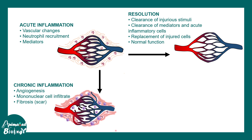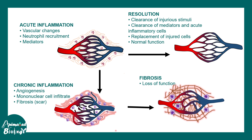In chronic inflammation there is angiogenesis, mononuclear cell infiltration, and there could also be fibrosis or scar formation. Healing can occur via scar formation, which could lead to loss of function as well. Generally in acute inflammation things would resolve normally, but in some rare occasions there could also be scar formation.